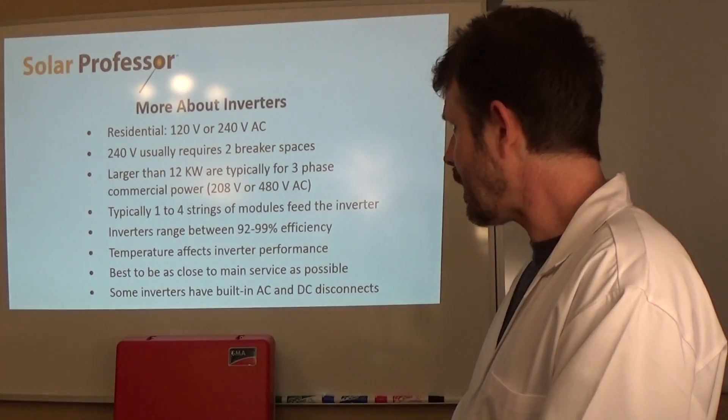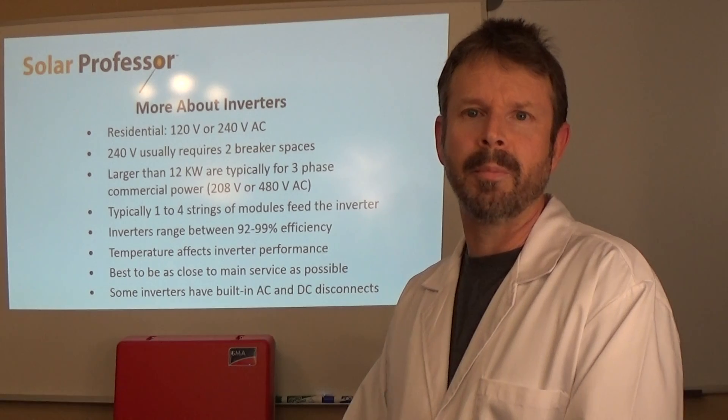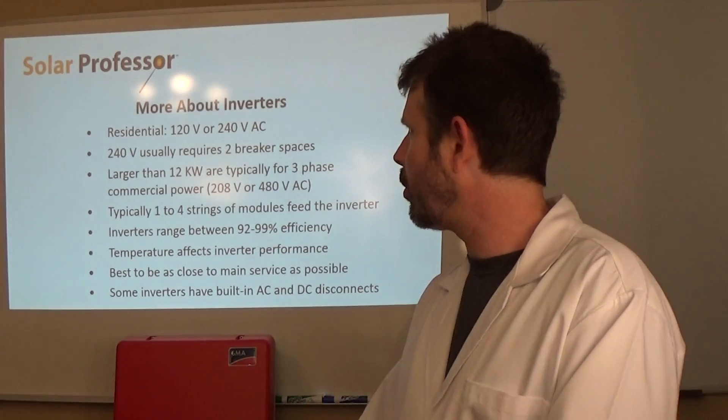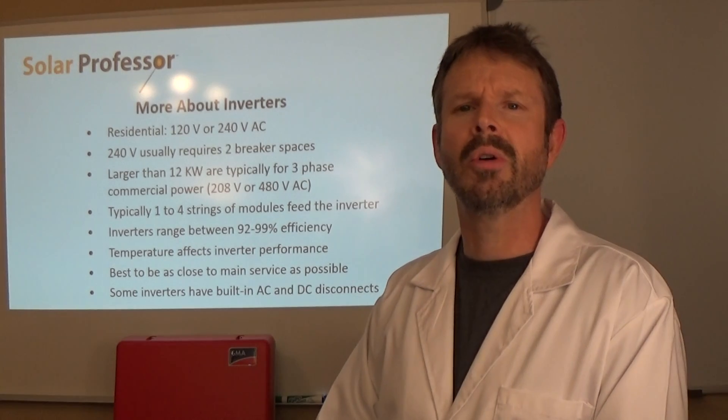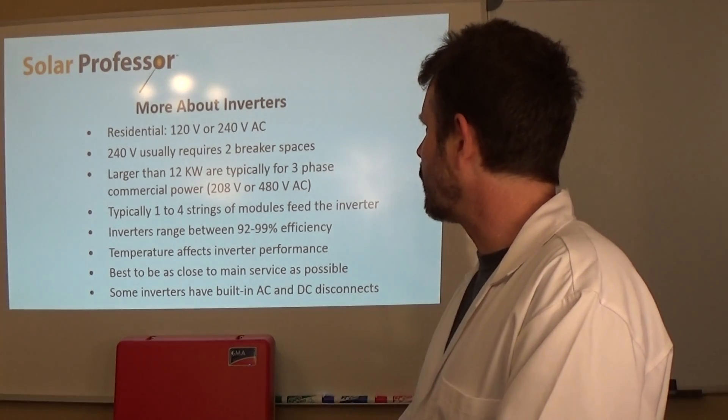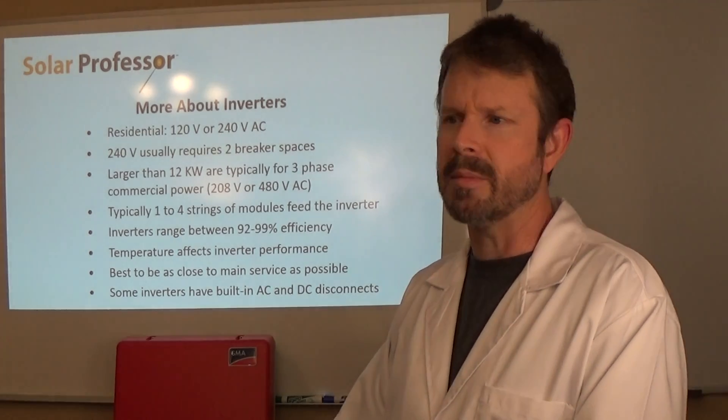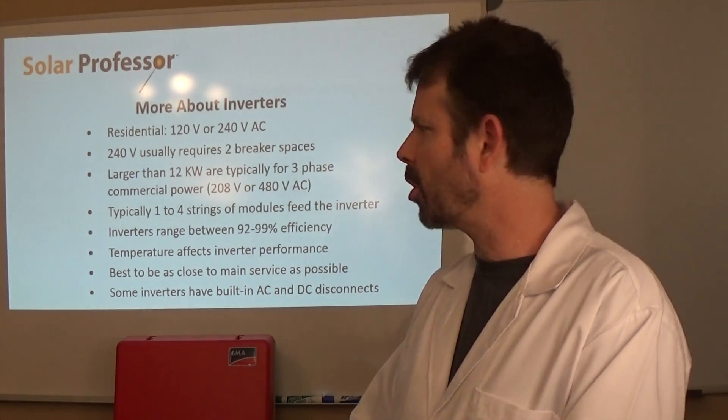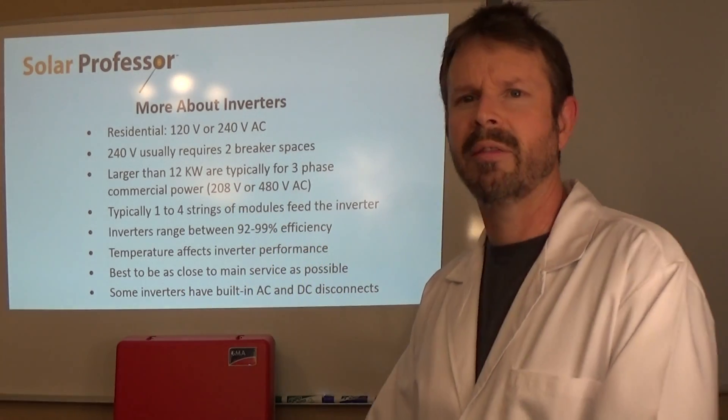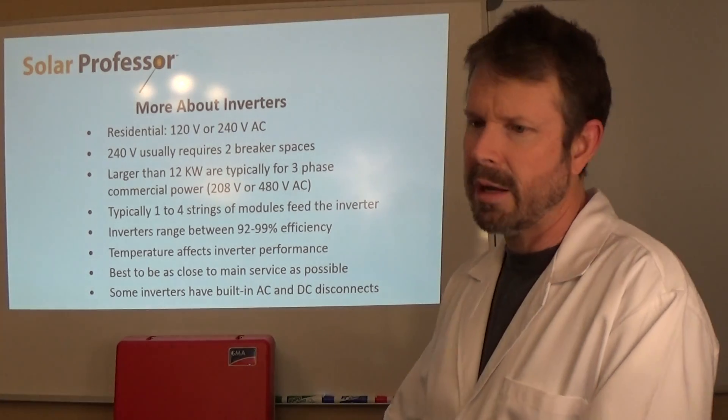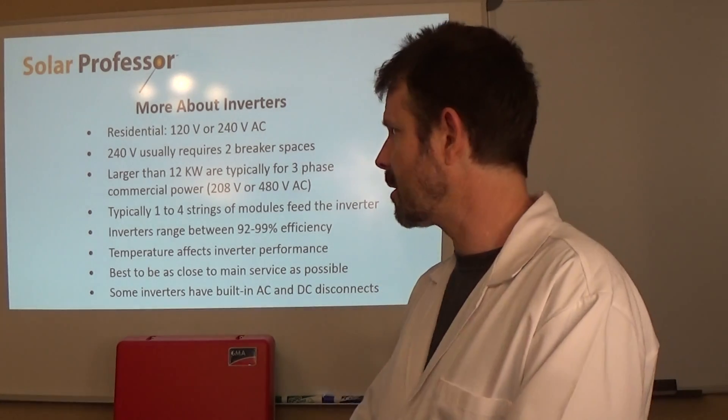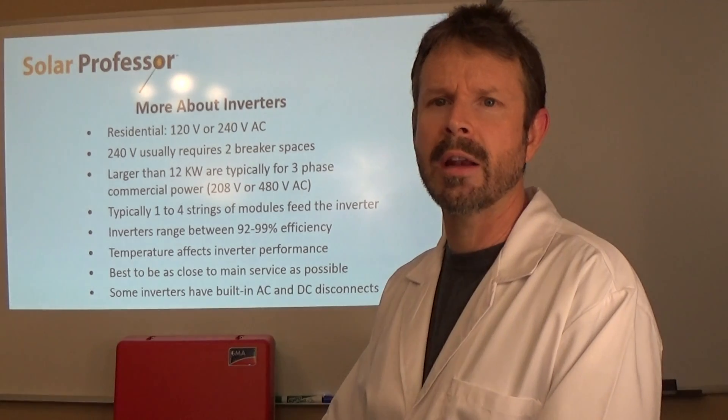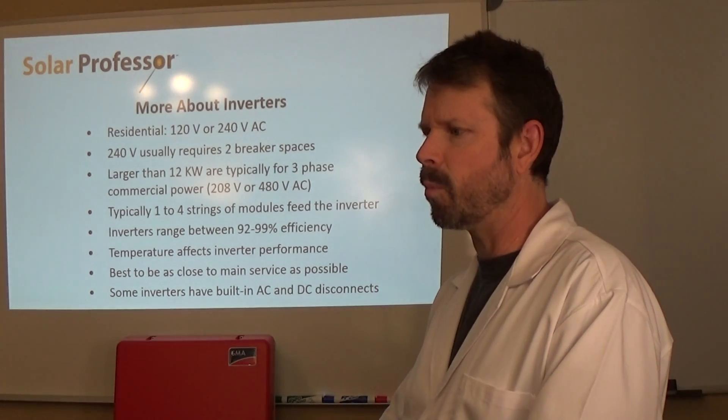More about inverters here. Residential inverters are either 120 volts or 240 volts. Most inverters are dual pole and they require two breaker spaces so that you can get 240 volts out of the inverter. Larger than 12 kilowatts are typically for commercial systems. You'll see 208, 480, sometimes 240 commercial three phase, sometimes 277. It depends on the equipment that you're using and the transformer that you're trying to connect the inverter to.